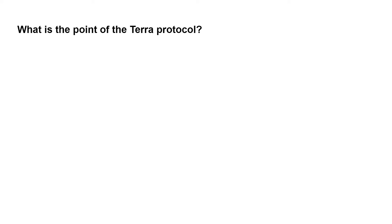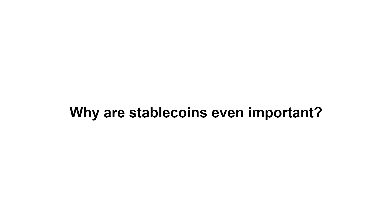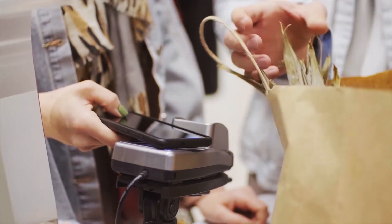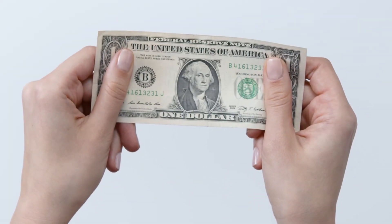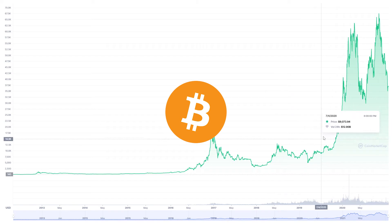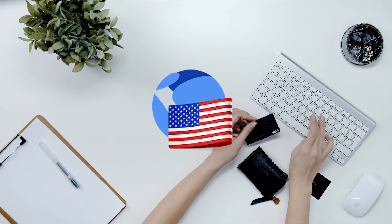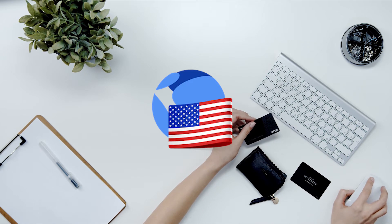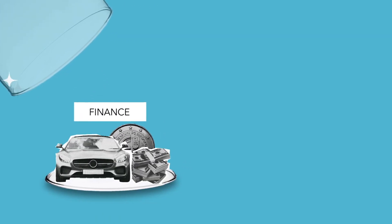The Terra Protocol's first function is to make algorithmic stablecoins useful and in doing so, onboard the general public to cryptocurrency. The second function is to enable dApps to be built on top to provide even more utility to the ecosystem. Why are stablecoins important? For people to transact, the volatility of a currency must be negligible. People must have confidence that the price won't drop or spike unexpectedly — that's why people think in terms of the US dollar or Korean won. This is also why it's difficult for merchants to transact with Bitcoin. Stablecoins allow people to transact with confidence in a decentralized crypto economy, empowering them to remove middlemen like banks and brokerages to truly own their own finances.